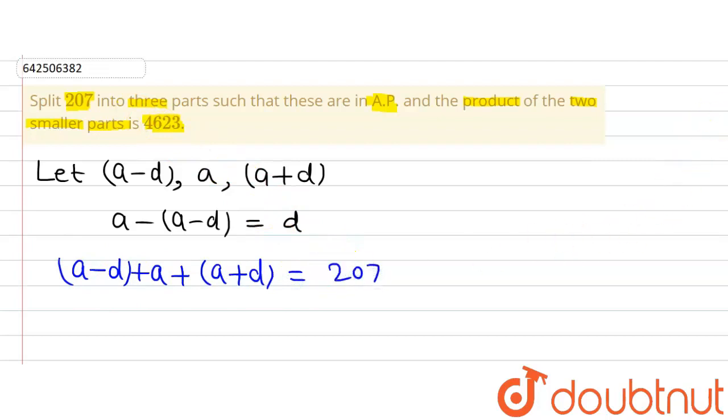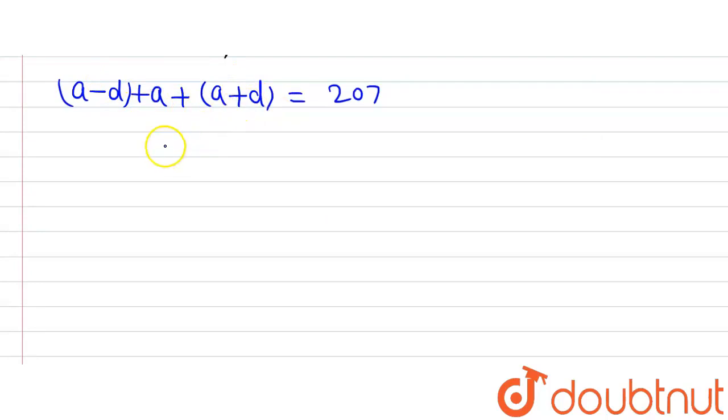Now, on solving it, we will get this minus D will get cancelled out with this plus D and we will have three A is equal to 207, and A will be equal to 207 divided by 3 which will give us 69. So the A has been found out.